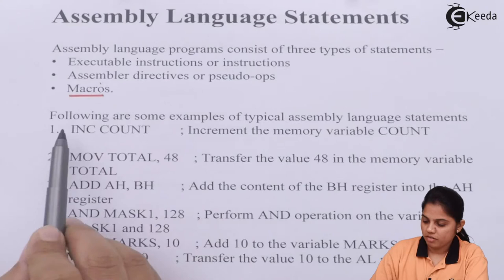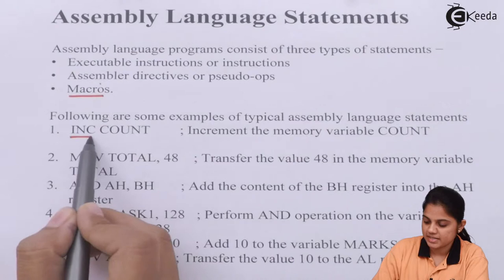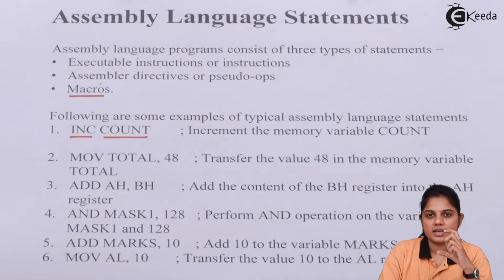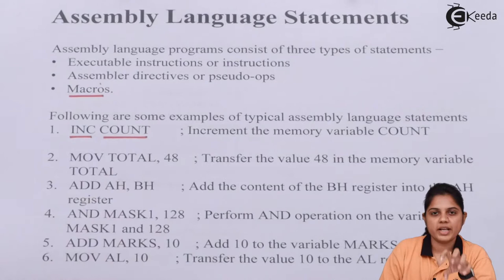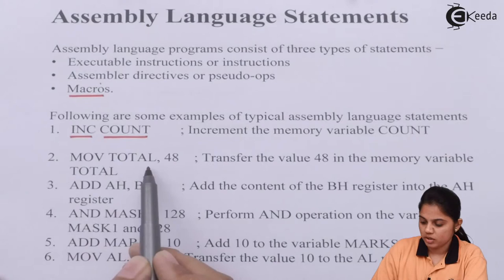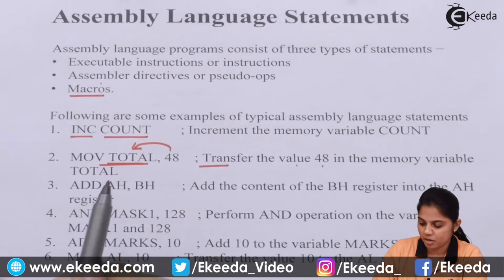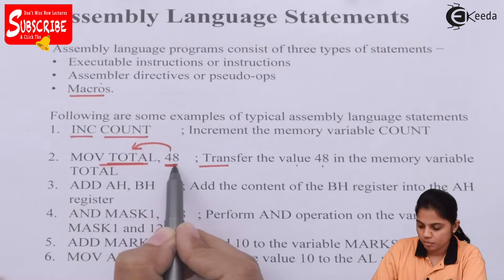The following are some examples of typical assembly language statements. First, 'INC count' — this increments the memory variable count, so whatever is being counted, that count variable gets incremented. Second, 'MOV total, 48' — this transfers the value 48 into the memory variable called 'total', instructing the processor to save the number 48 into that memory location.